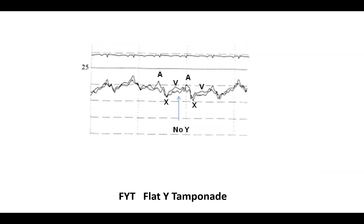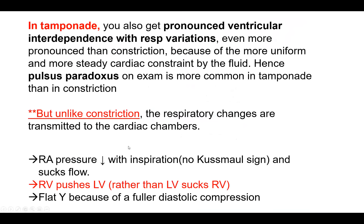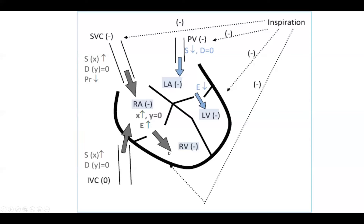This is an illustration of tamponade. To summarize: tamponade has similarities with constriction but a different mechanism of discordance — there is transmission of respiratory pressure. Second, there is no Kussmaul sign. Third, there is more uniform compression of the cardiac chambers, which explains the lack of any Y descent. And it also explains a more pronounced discordance — therefore more pulsus paradoxus.